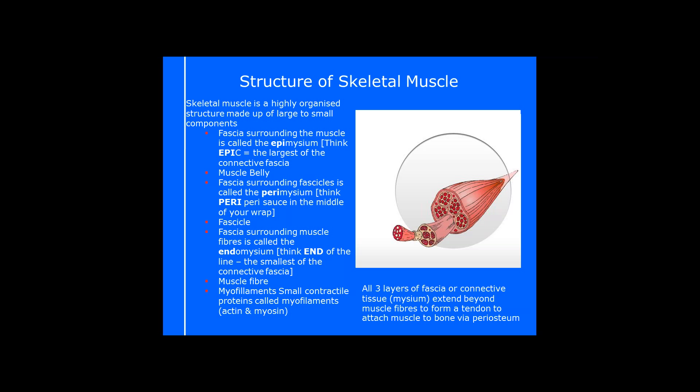I'm going with peri-peri because I'm a big Nando's fan. You always put the peri sauce in the middle of your wrap or in the middle of your chicken burger. You generally don't put it on the outside. So that's how we're going to remember this one, that literally your fascia that goes around the middle bit, the fascicles, is going to be called a perimysium.